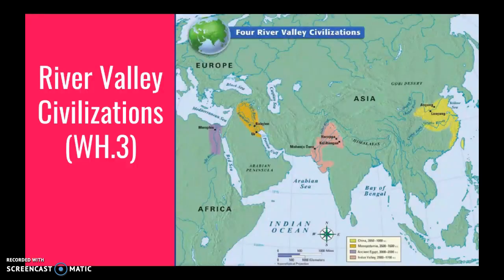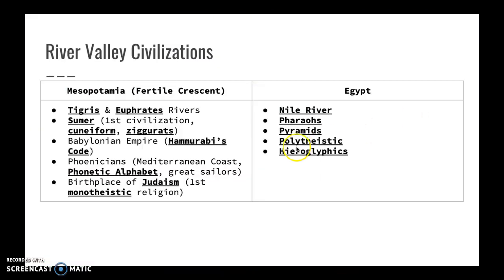The next topic is River Valley Civilizations, looking at Standard 3. On the map you see Egypt, Mesopotamia, the Indus River Valley, and the China River Valley. Mesopotamia's rivers were the Tigris and the Euphrates. It had one of the very first civilizations and the first cities in Sumer. They created a writing system called cuneiform, used a wedge to create that writing, and also had large temples called ziggurats. The Babylonian empire developed here, and Hammurabi's code — one of the very first coded law systems — was created. The Phoenicians and Judaism also developed in Mesopotamia.